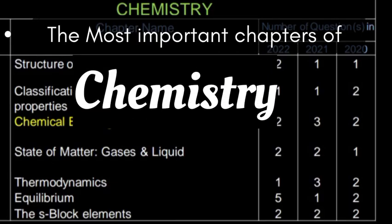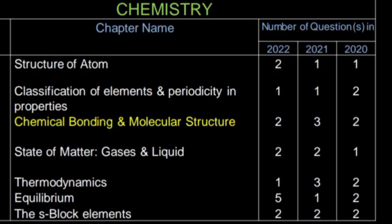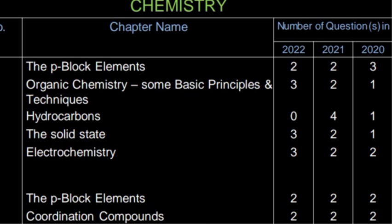The most important chapters of chemistry: structure of atom, classification of elements and periodicity in properties, chemical bonding and molecular structure, state of matter gases and liquid, thermodynamics, equilibrium, s-block elements, p-block elements, organic chemistry some basic principles and techniques, hydrocarbons.